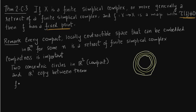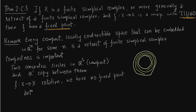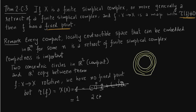Now we describe the map f from X to X. You take a rotation — just a small rotation. Then you can obviously see there are no fixed points. But the Lefschetz number is non-zero. In fact it is equal to the Euler characteristic, because the map f is homotopic to the identity.